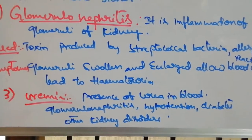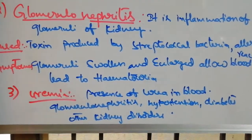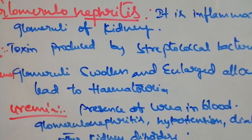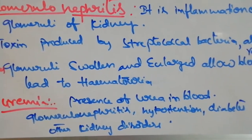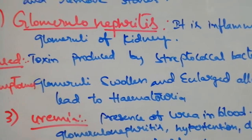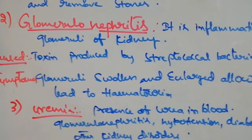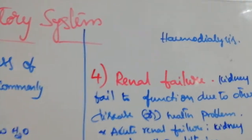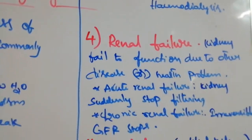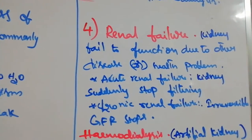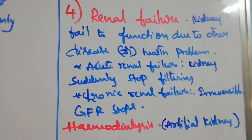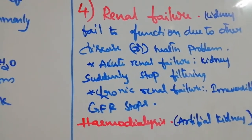The next disease is uremia — the presence of urea in the blood. It is caused by glomerular nephritis or other diseases like hypertension and diabetes, where urea enters the blood. The treatment for uremia is hemodialysis.